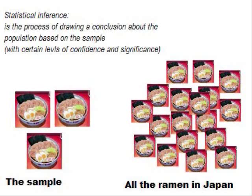For example, consider all the ramen stores in Japan. If I wanted to know whether all the ramen in Japan is amazing or whether some are better than others, I'm going to take a sample. If the sample comes out showing that all ramen are amazing, I then make an inference that all ramen in Japan are amazing. That's the process of drawing a conclusion about the population based on the sample. We'll talk about confidence and significance later on.